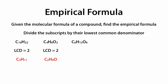Again, with C₆H₁₂O₆, we look at 6, 12, and 6 and find the lowest common denominator, which is 6. We divide 6 by 6, 12 by 6, and 6 by 6 to get an empirical formula of CH₂O.